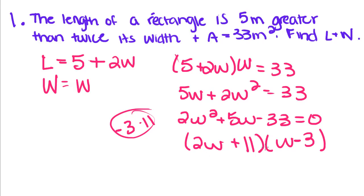And then if you FOIL this back out, you get 2W squared minus 6W plus 11W minus 33, and 11W minus 6W would give us 5. So then we can set both of these equal to 0.